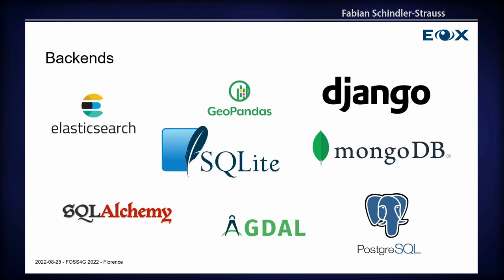This is even compounded with the fact that there are many, many backends that you can actually then apply these filters to. So you have search engines like Elasticsearch, higher-level frameworks like SQLAlchemy or Django. You can also make low-level queries for SQLite or PostgreSQL. Even GDAL has its own SQL interface that you could use. Then there's also other things like GeoPandas — you can have a local data frame that you might also want to filter. Or you can have a NoSQL database like MongoDB. So again, we have a very diverse set of backends that drive your application, and switching from one to the other is a huge task.